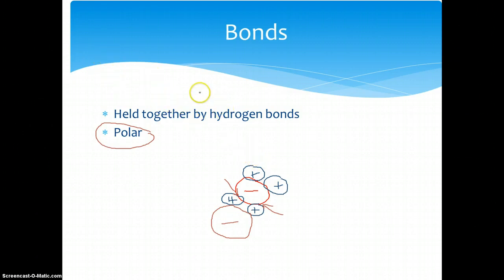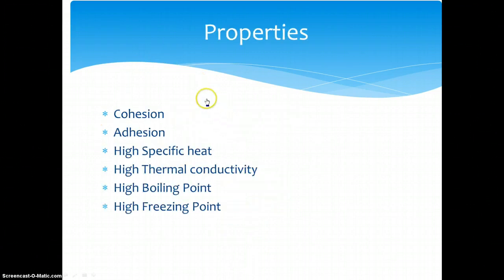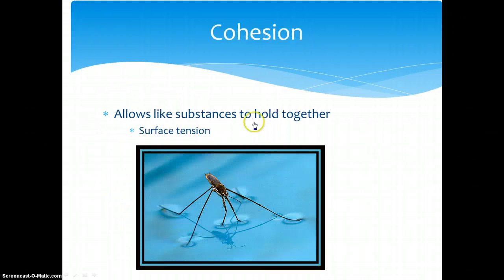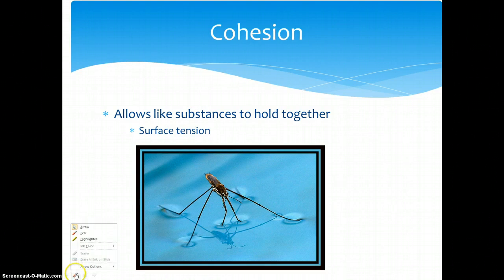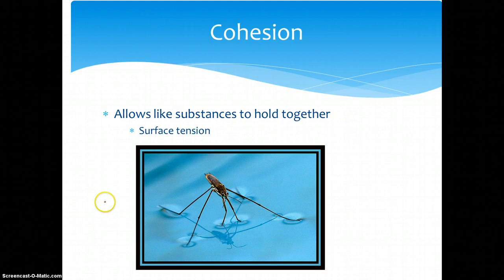This leads us to the first property we are going to describe, which is cohesion. Cohesion by definition is just an attraction between like substances which helps the substance hold together. Water does this because, as mentioned earlier, it is polar. The individual water molecules stick together, creating surface tension.